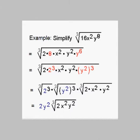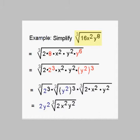In this example, I am going to simplify a cube root. We have the cube root of 16x squared y to the 8th. The trick here is to rewrite that radicand — the part inside the radical sign — as products of perfect cubes times other factors.